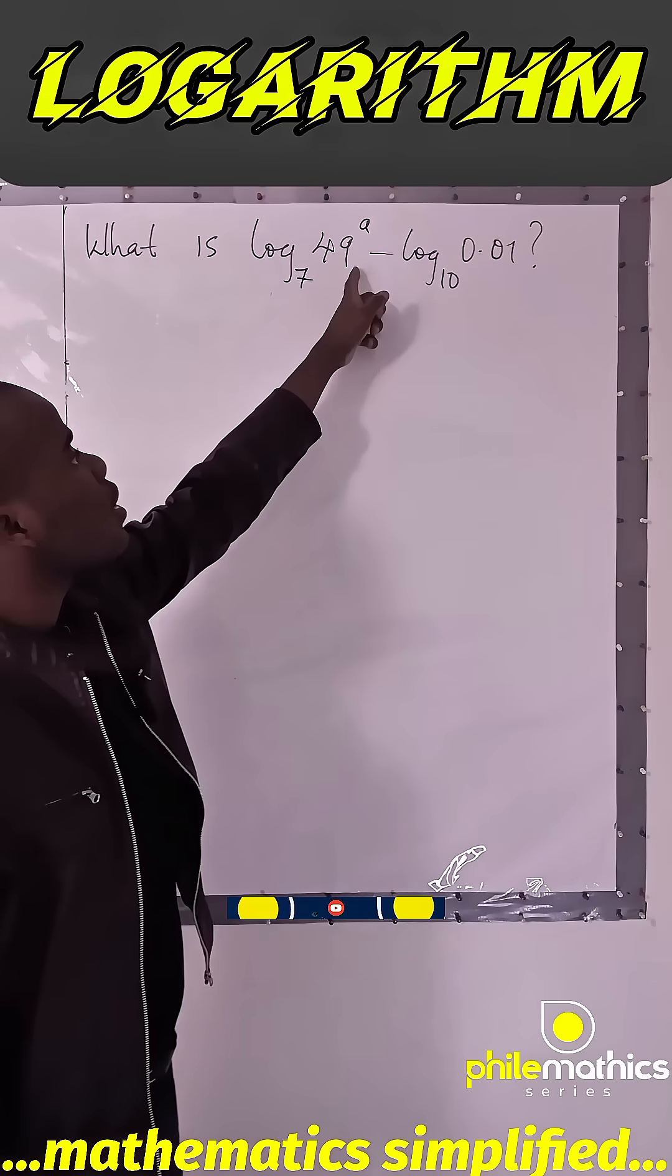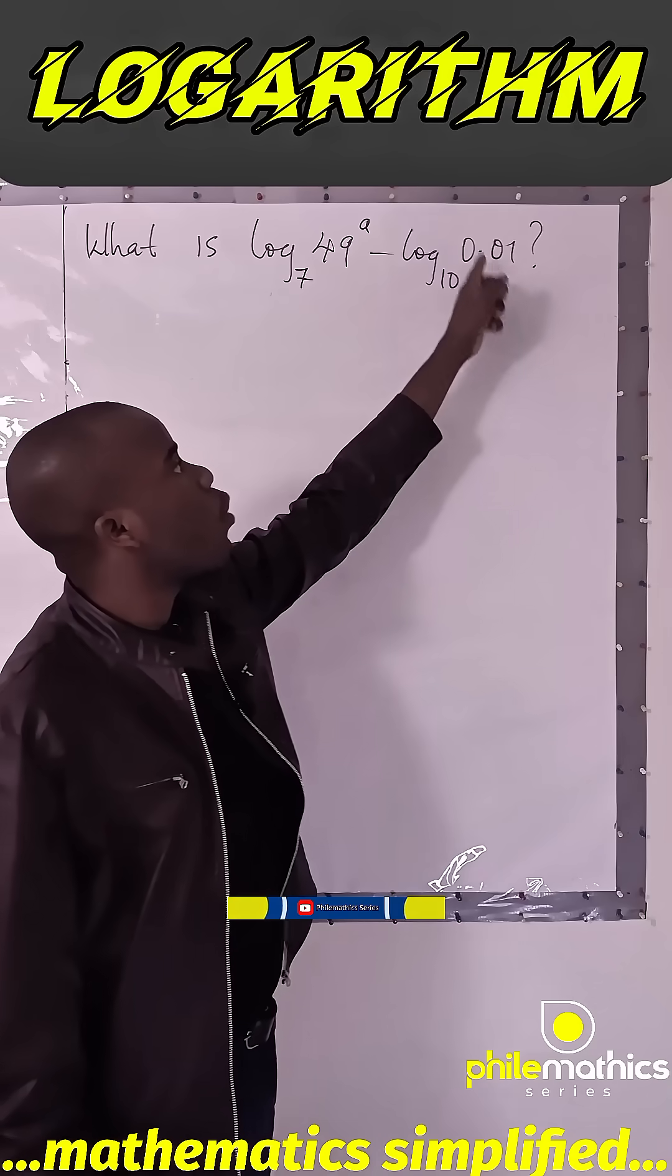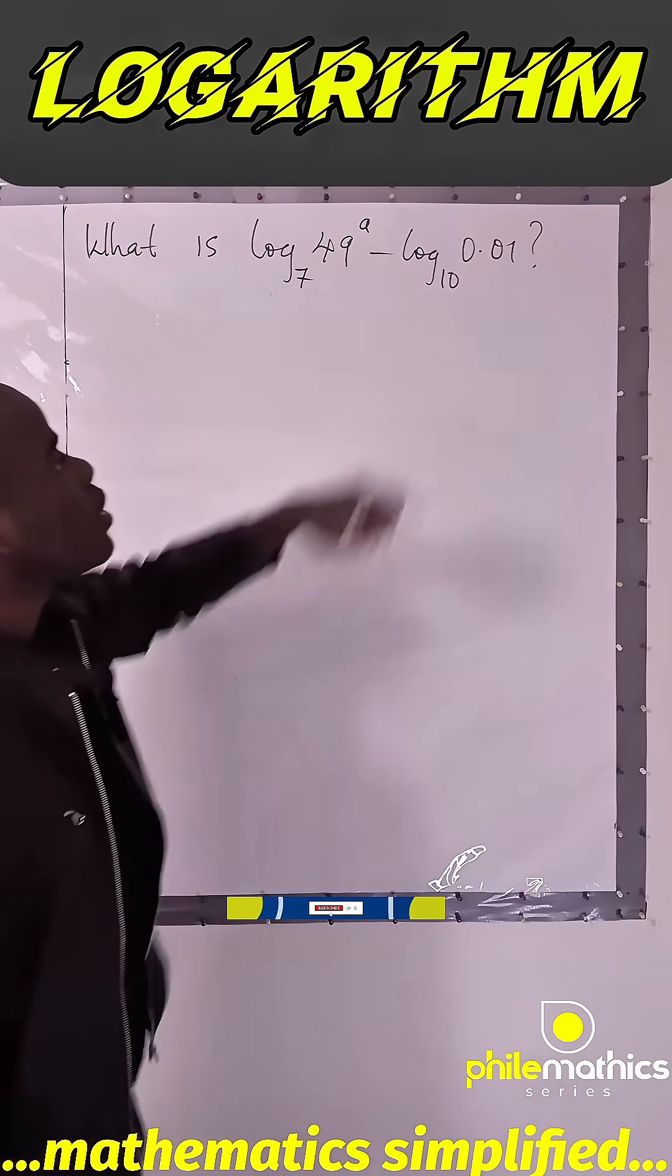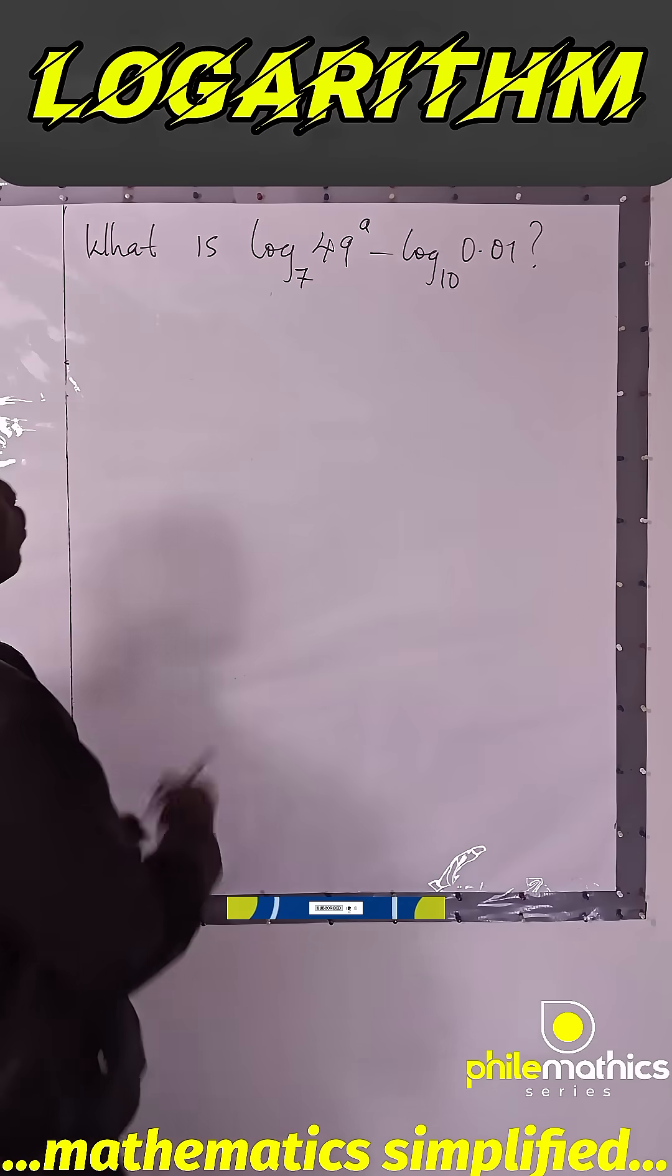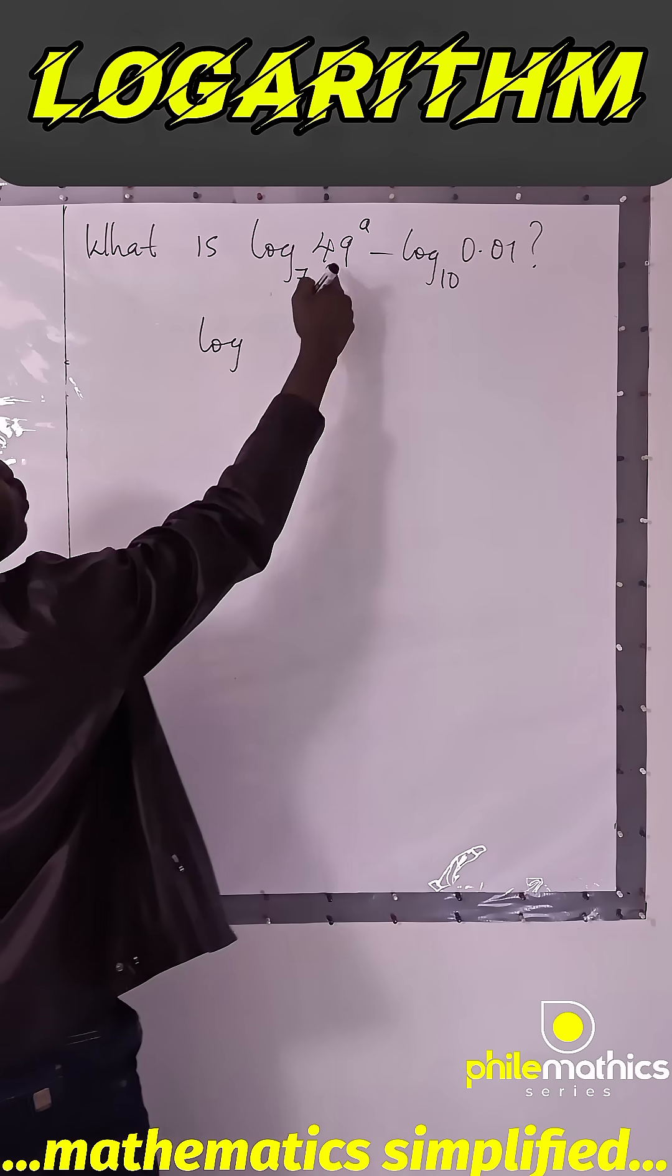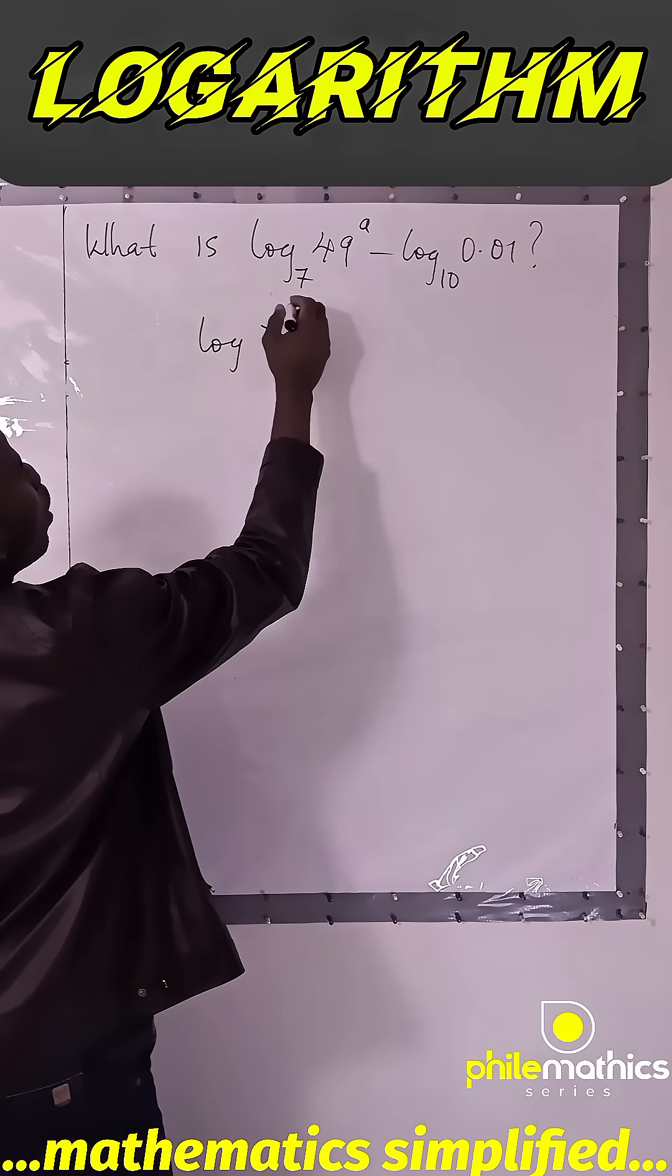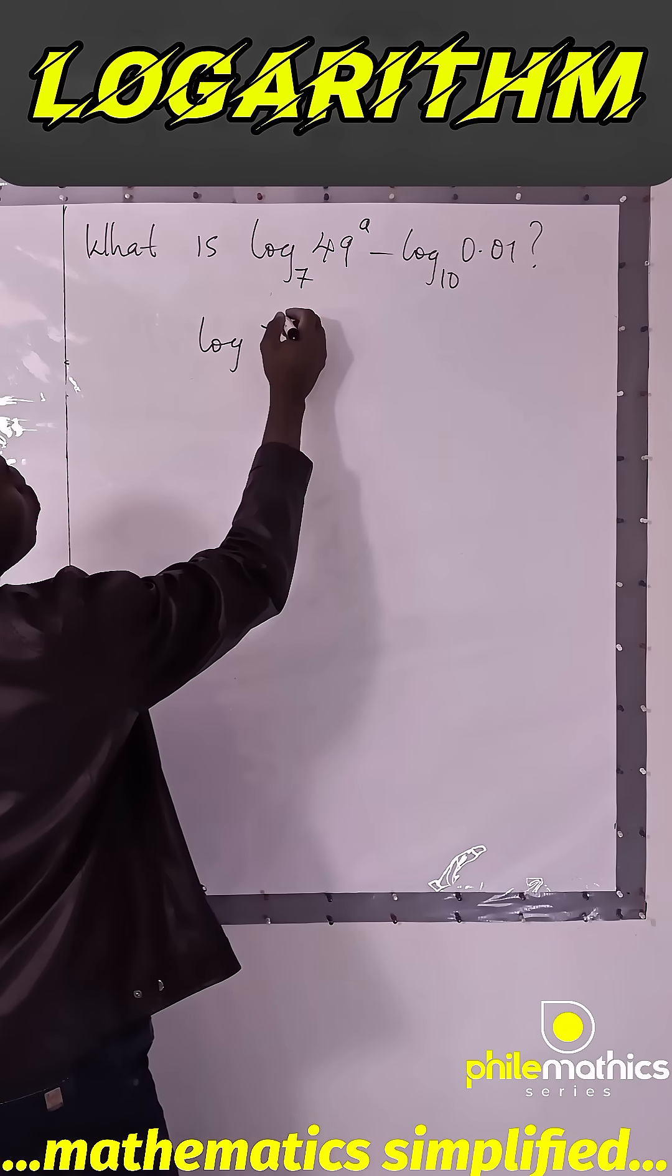What is log base 7 of 49 to power a, minus log base 10 of 0.01 equal to? Now from this, log 49 can be reduced in index format to 7 to power 2, and from product law it will be 7 to power 2 times a, which is 2a.